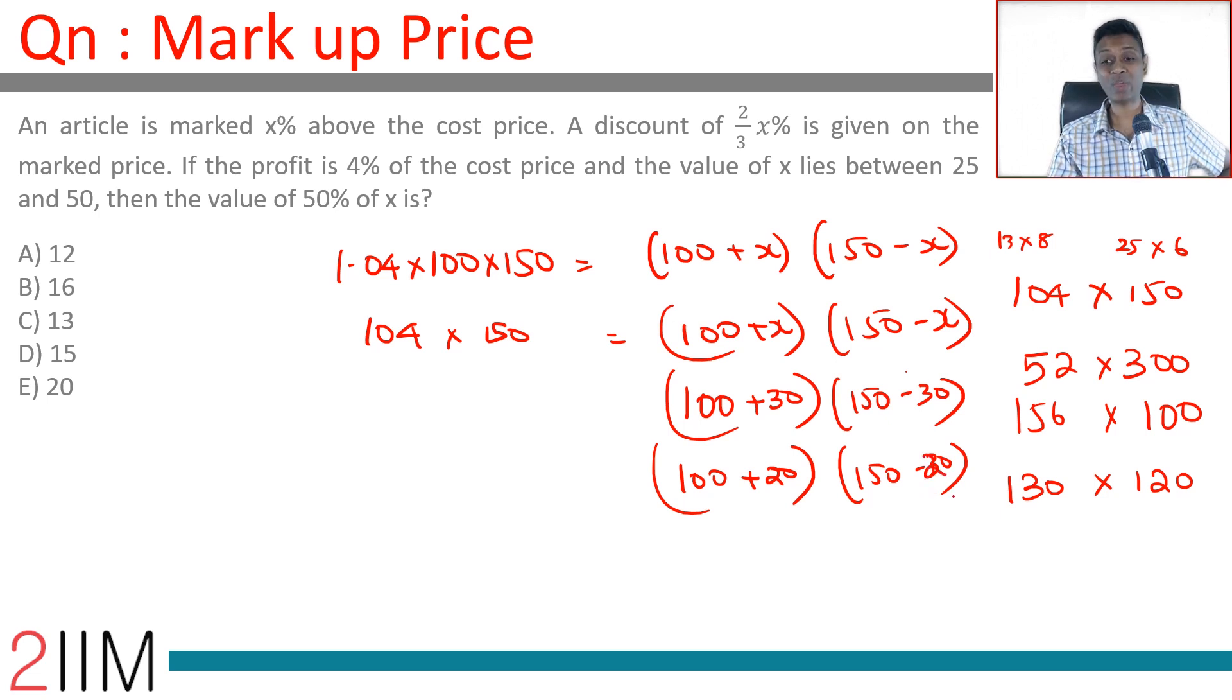So x could be 20 or 30. Both of them will work fine. Now we are told that the value of x lies between 25 and 50, so it's not 20. So x is 30. We want to find the value of 50 percent of x. 50 percent of x is 15.